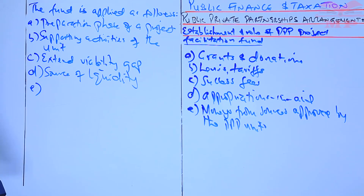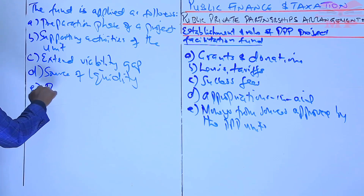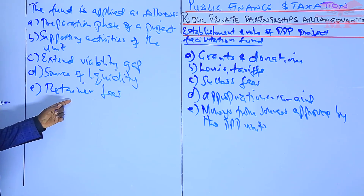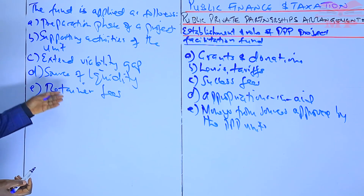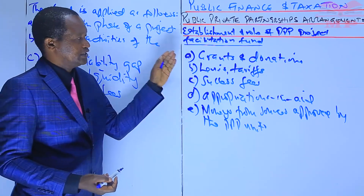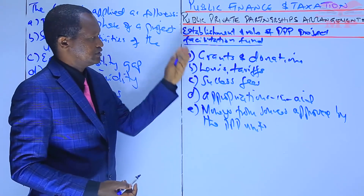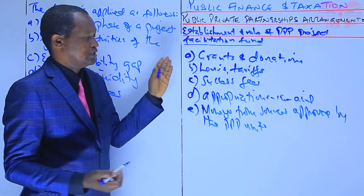Lastly, the fund is applied to settle transaction advisers' retainer fees. So these are five ways in which the Project Facilitation Fund is applied. The sources of the fund include grants, donations, levies, tariffs, success fees, appropriations in aid, and money from sources approved by the PPP unit.